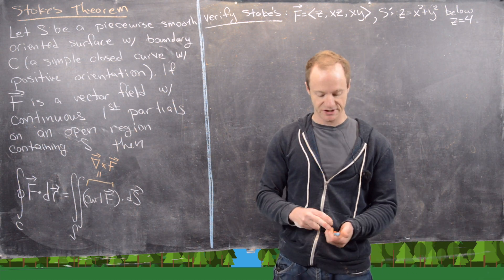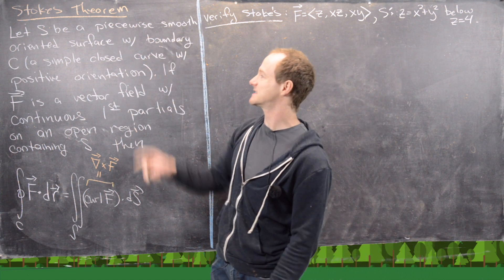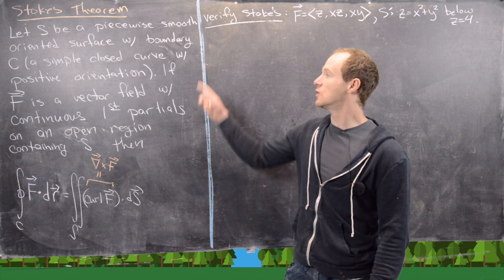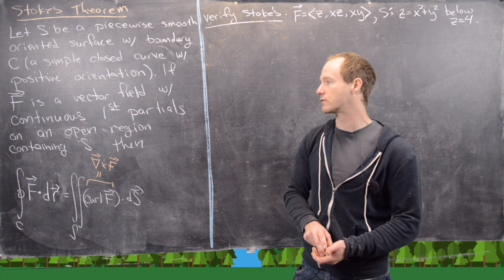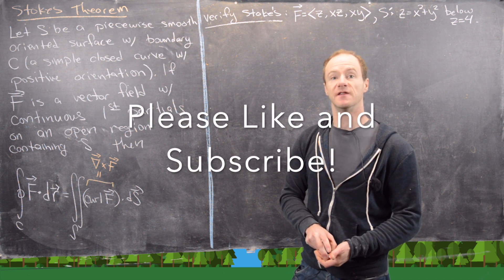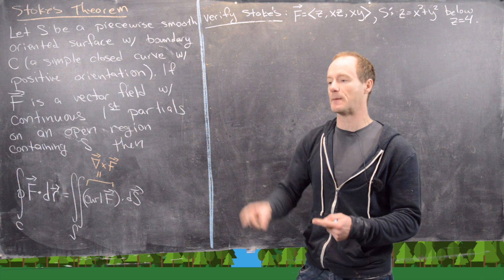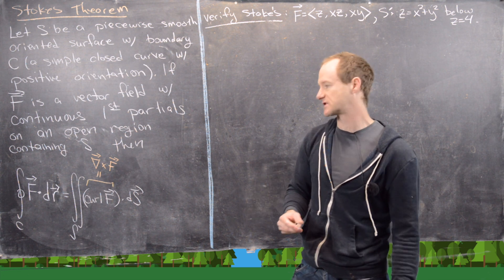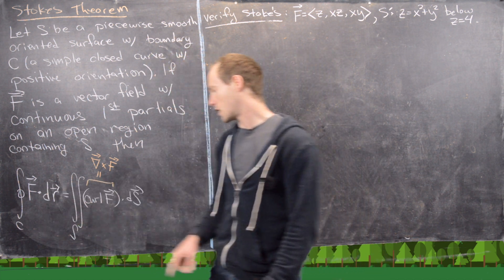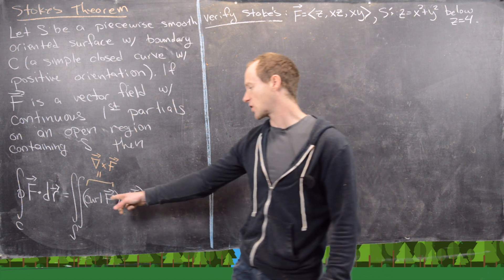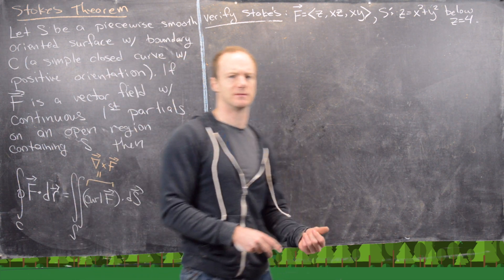In this video we're going to do another verification example for Stokes' Theorem. So let's just recall Stokes' Theorem real quick. If S is a nicely defined surface with a boundary curve C, and F is a vector field which has continuous partials on a region containing that surface S, then the line integral over the bounding curve of F·dr is equal to the surface integral of the curl of F·dS. Verification means we need to calculate both sides to make sure they're the same.